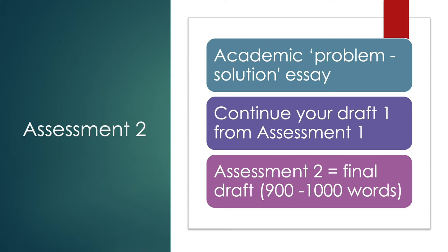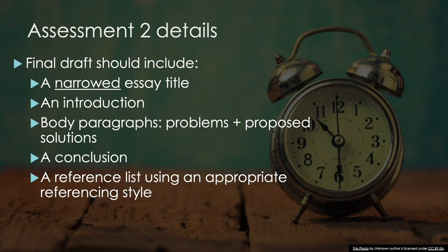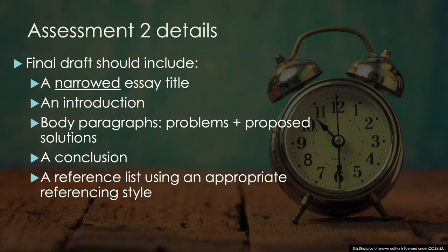In Assessment 2, you have to write about 900 to 1000 words. You need to include a narrowed essay title, an introduction, body paragraphs covering the problem and proposed solutions, a conclusion, and a reference list in the appropriate referencing style for your discipline.